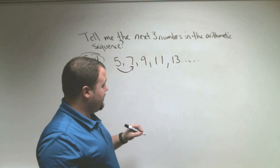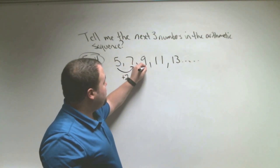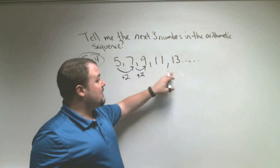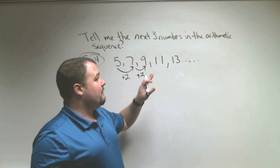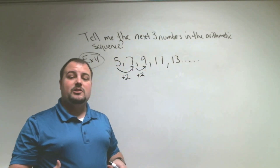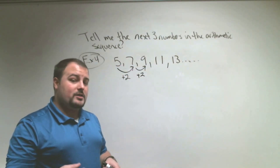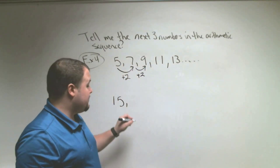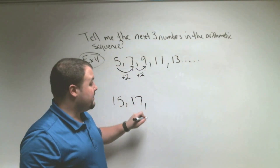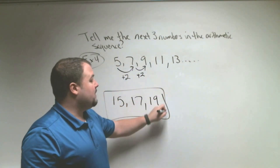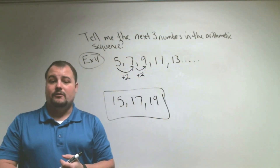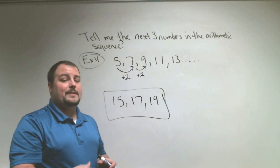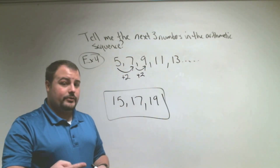The difference from term to term is plus 2 — it's continuously the same, always adding 2. 9 plus 2 is 11, 11 plus 2 is 13. So all I've got to do is add 2 three more times. 13 plus 2 is 15, 15 plus 2 is 17, 17 plus 2 is 19. These are the next three terms of the arithmetic sequence. Whenever we're told to find the next three numbers, all we do is continue the pattern for three more numbers.